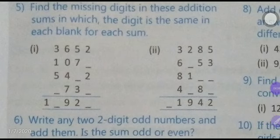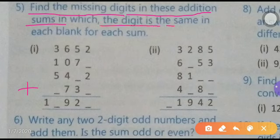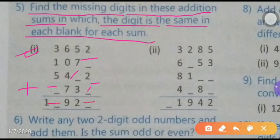Next, question five asks: find the missing digit in these addition sums. The condition is that the same digit goes in each blank for each sum. We will use trial and error method, starting from one.